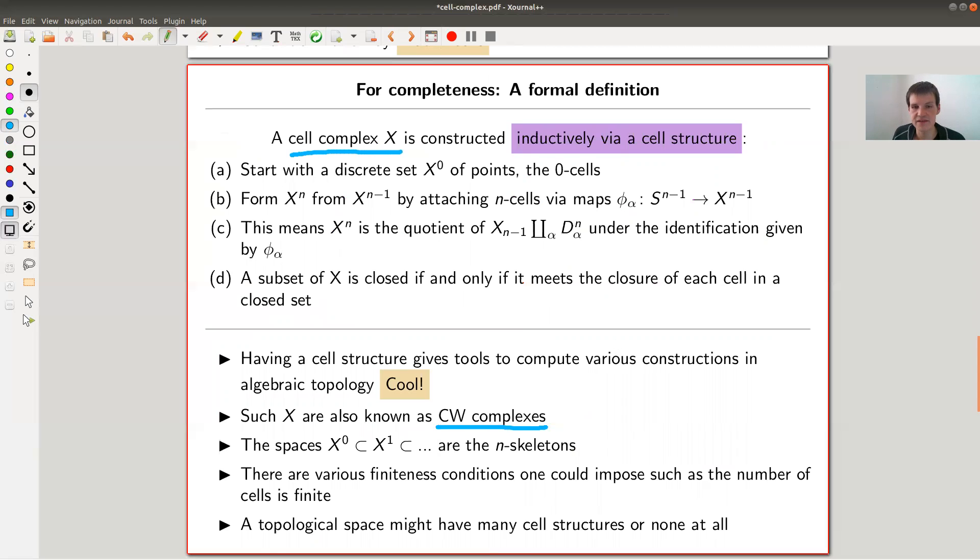A cell complex is constructed inductively by exactly what I said: start with a discrete set of X^0 points, the 0-cells. Assume that the n-1 skeleton is already constructed. Then you attach n-cells by maps from S^(n-1) to X^(n-1), forming X^n by attaching n-cells and imposing the quotient under this gluing.